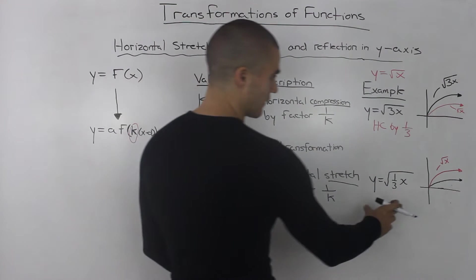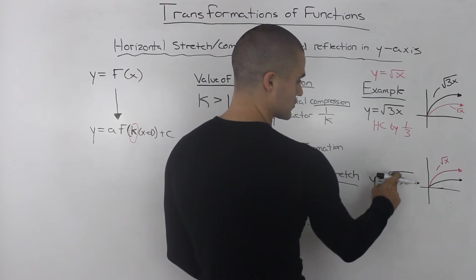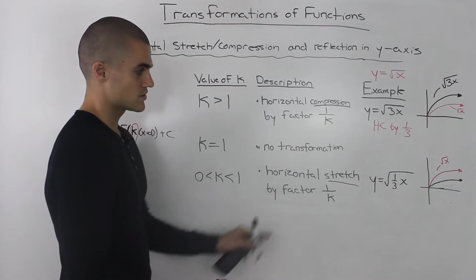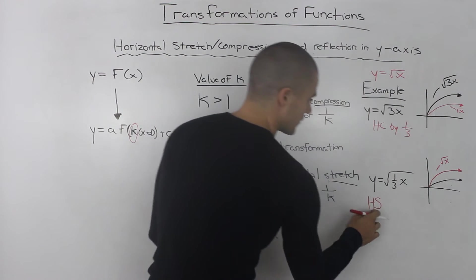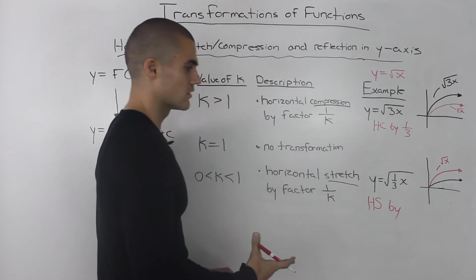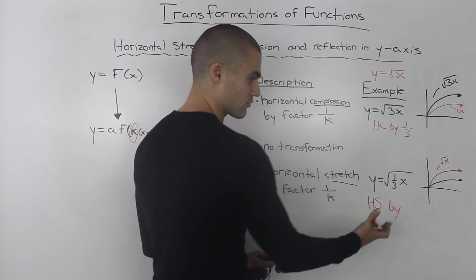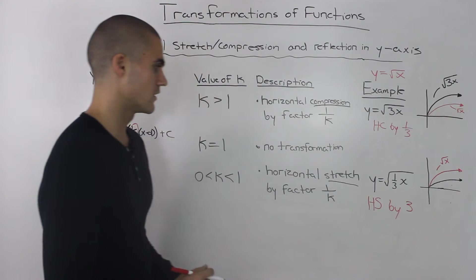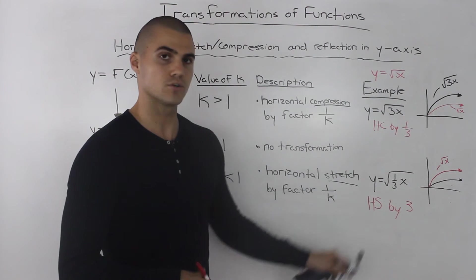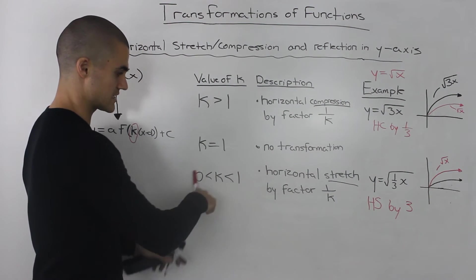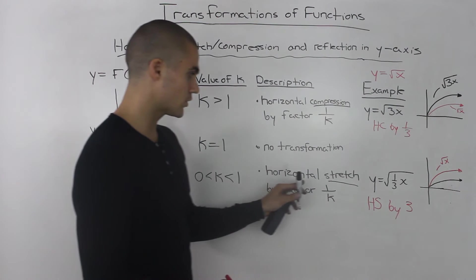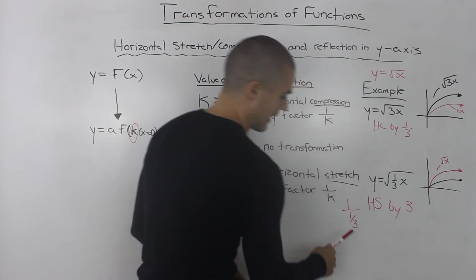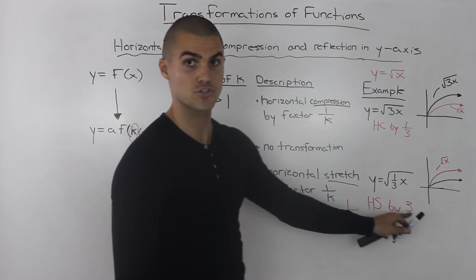For example, if we take the parent function square root of x and transform it to y equals the square root of (1/3)x, the k value is 1/3, which is between 0 and 1. We say this function undergoes a horizontal stretch by a factor of 1 over k, or 1 over (1/3). The reciprocal of 1/3 is 3, so it's a horizontal stretch by a factor of 3.